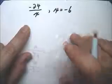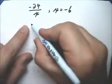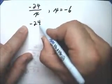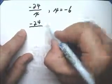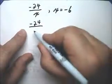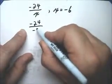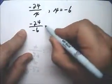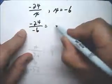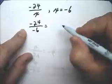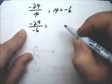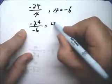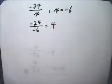Here we have negative 24 divided by x, and this time x is negative 6. So here we have a negative divided by a negative is a positive — that's why this is positive 4.